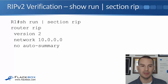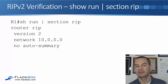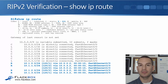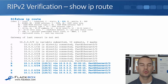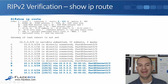To see just the RIP configuration, we can do 'show run | section rip' rather than scrolling through the entire config — quite convenient. Once RIP is configured, we'll want to verify we have RIP routes in the routing table using 'show ip route'. In the example, there are four routes learned via RIP, indicated by 'R' in the left column. The administrative distance is 120, followed by the metric — the hop count to the destination network.